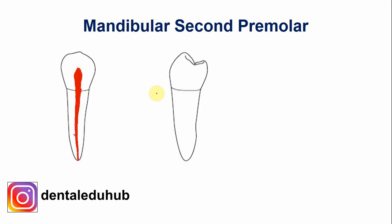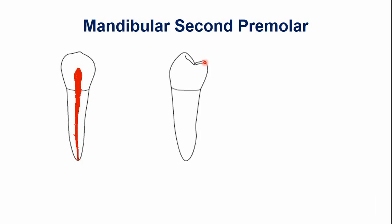This is the buccolingual section of the mandibular second premolar. This is the buccal cusp and this is the lingual cusp. In the mandibular second premolar, the lingual cusp is well developed as compared to the first premolar, where the lingual cusp is very small.